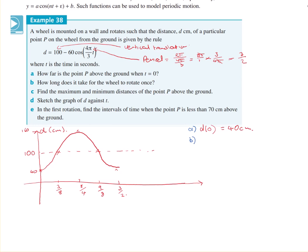B, and you can see because I've done all the work, how easy it is to actually answer the questions. How long does it take for the wheel to rotate? Well, it's got a period of 3 on 2. So it takes 3 on 2 seconds. Or 1.5 seconds. Either is okay.